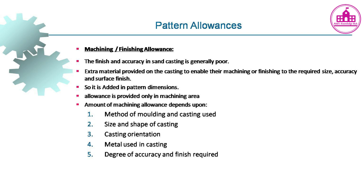Machining or finishing allowance is provided because the finish and accuracy in sand casting is generally poor. Extra material is provided on the casting to enable machining or finishing to the required size, accuracy, and surface finish, so it is added to the pattern dimensions. Allowance is provided only in the machining area. The amount depends on: method of molding and casting used, size and shape of casting, casting orientation, metal used, and degree of accuracy and finish required.